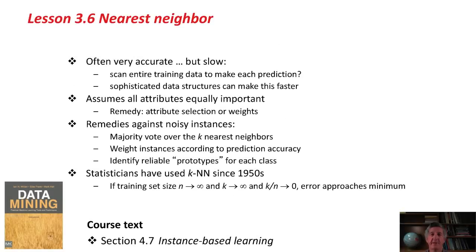Nearest neighbor is a really good method. It's often very accurate. It can be slow, and simple implementation would involve scanning the entire training data set to make each prediction, because we've got to calculate the distance of the unknown test instance from all of the training instances to see which is the closest. But there are more sophisticated data structures that can make this faster, so you don't need to scan the whole data set every time. It assumes all attributes are equally important. If that wasn't the case, you might want to look at schemes for selecting attributes or weighting attributes, depending on their importance.